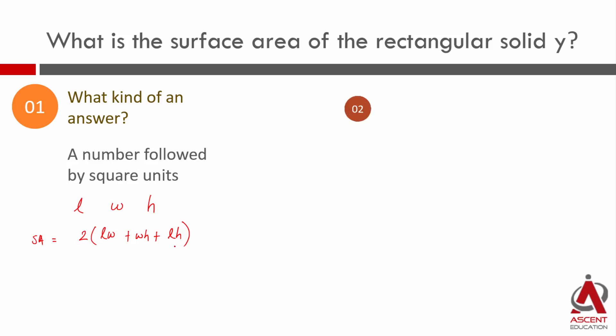When will we say the data is sufficient? In data sufficiency questions, when you are finding a number, when the answer is unique - one number like 43 square units - then data is sufficient. When is the data not sufficient? Either when you get more than one answer, or you do not have the information to find 2 times (LW plus WH plus LH). If you have more than one answer, then the data is not sufficient.